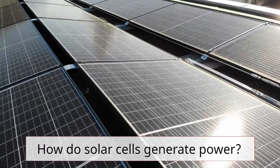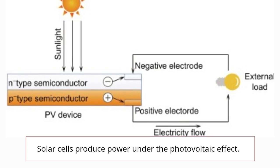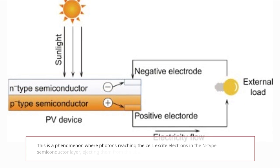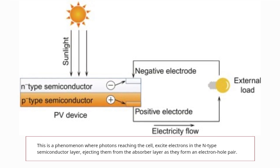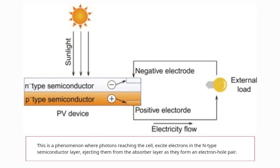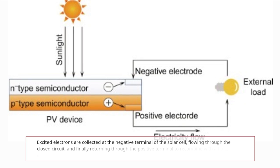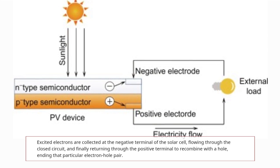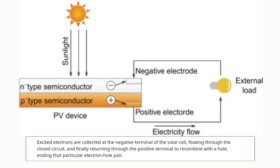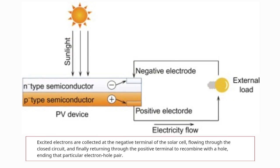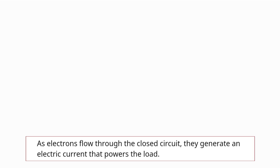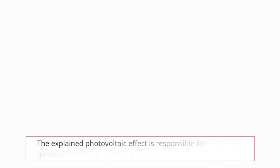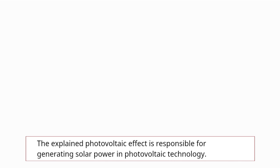How do solar cells generate power? Solar cells produce power under the photovoltaic effect. This is a phenomenon where photons reaching the cell excite electrons in the N-type semiconductor layer, ejecting them from the absorber layer as they form an electron-hole pair. Excited electrons are collected at the negative terminal of the solar cell, flowing through the closed circuit, and finally returning through the positive terminal to recombine with the hole, ending that particular electron-hole pair. As electrons flow through the closed circuit, they generate an electric current that powers the load. This photovoltaic effect is responsible for generating solar power in photovoltaic technology.